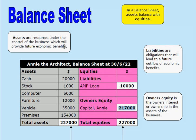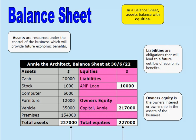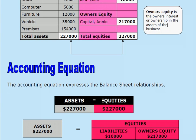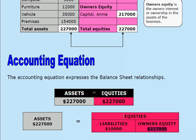Assets are resources under the control of the business which will provide future economic benefits. Liabilities are obligations that will lead to a future outflow of economic benefits. And owner's equity is the owner's interest or ownership in the assets of the business. The accounting equation shows the relationships in the balance sheet: assets equals equities. In this example, $227,000 in assets equals equities of $227,000 — broken up as liabilities of $10,000 and owner's equity of $217,000. Assets equals equities: the accounting equation.